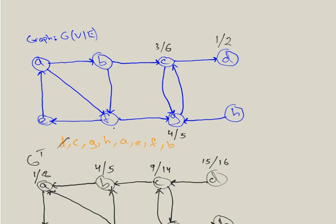We can see that D by itself and C and G together are each going to be strongly connected components — every time you cross something off the list, that's a strongly connected component. Next up is H, starting at time seven. H only has an arrow going to G, which has already been discovered, so H finishes at time eight. H is also a strongly connected component by itself. Next up is A, discovered at time nine.